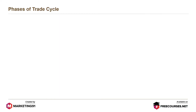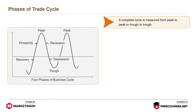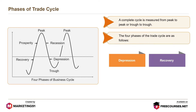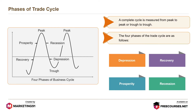Now let's understand the phases of trade cycles. A complete cycle is measured from peak to peak or trough to trough. The four phases of the trade cycle are depression, recovery, prosperity, and recession.